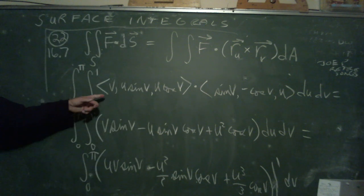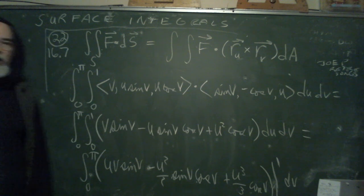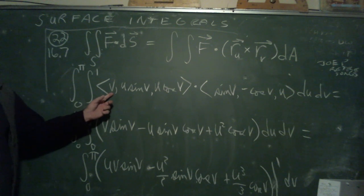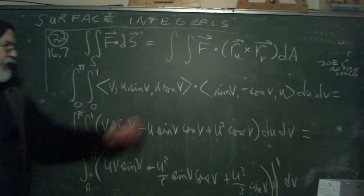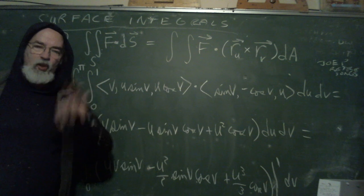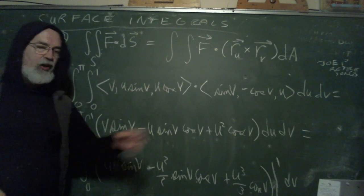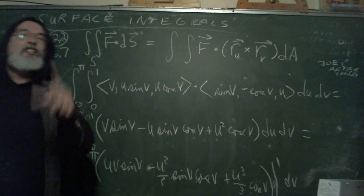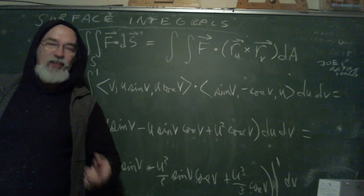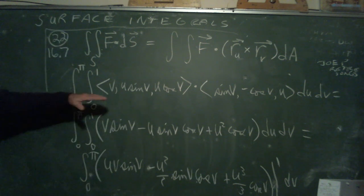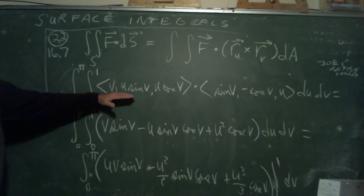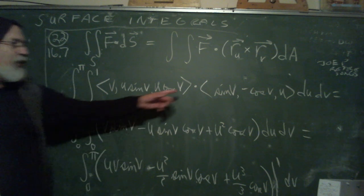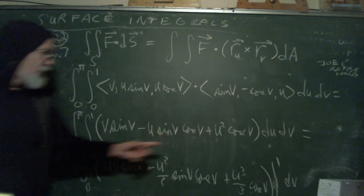The vector field was ⟨z, y, x⟩. From the helicoid parameterization, z = v goes in the first spot, y = u sin v goes in the second spot, and x = u cos v goes in the third spot. So I substitute the surface into the vector field — just like with line integrals. Then I dot it with ⟨sin v, −cos v, u⟩. You have to do the vector field substitution: plug the surface parameterization into the vector field components, then take the dot product.